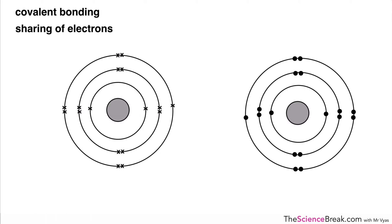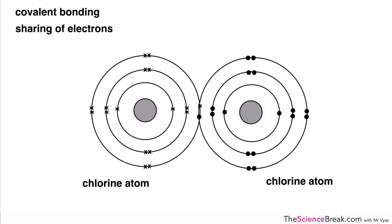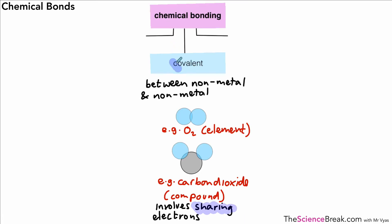We want to spend a little bit of time looking at covalent bonding, which involves the sharing of electrons. Here we've got our example: two chlorine atoms which can join together — they're both non-metals, so they can join together and they don't actually transfer electrons, they share electrons. The way they do that is they come together to share one pair of electrons, and that binds the two atoms together with a covalent bond. You can see the covalent bond in between the two atoms there.